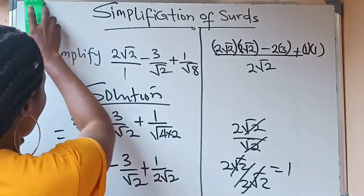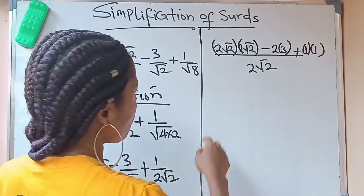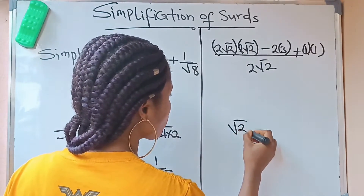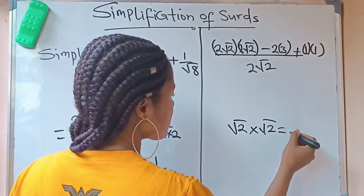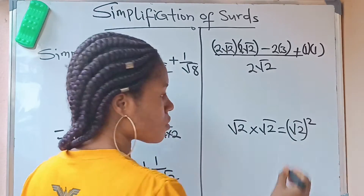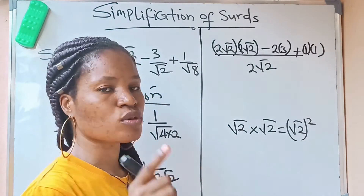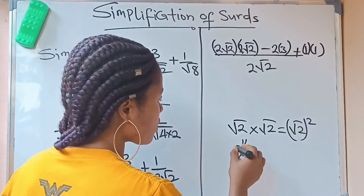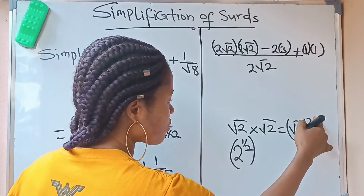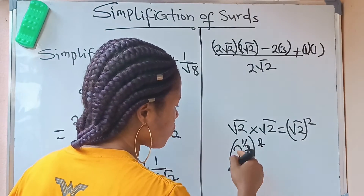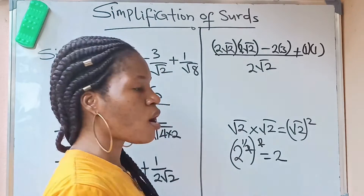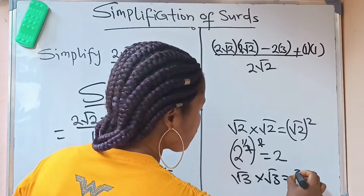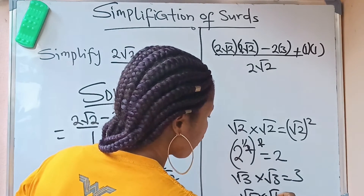Now I want to explain something important. When you have root 2 times root 2, that is root 2 squared. Root 2 is the same as 2 raised to the power of one-half, so root 2 squared is 2 to the power of one-half raised to the power of 2 — the powers cancel and you get 2. This means root 2 times root 2 equals 2, root 3 times root 3 equals 3, root 5 times root 5 equals 5, and so on.